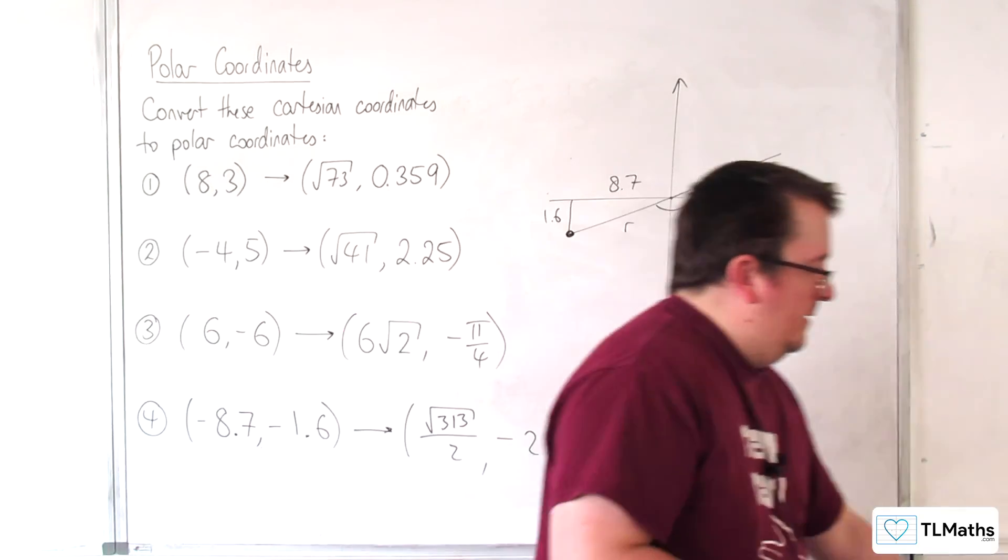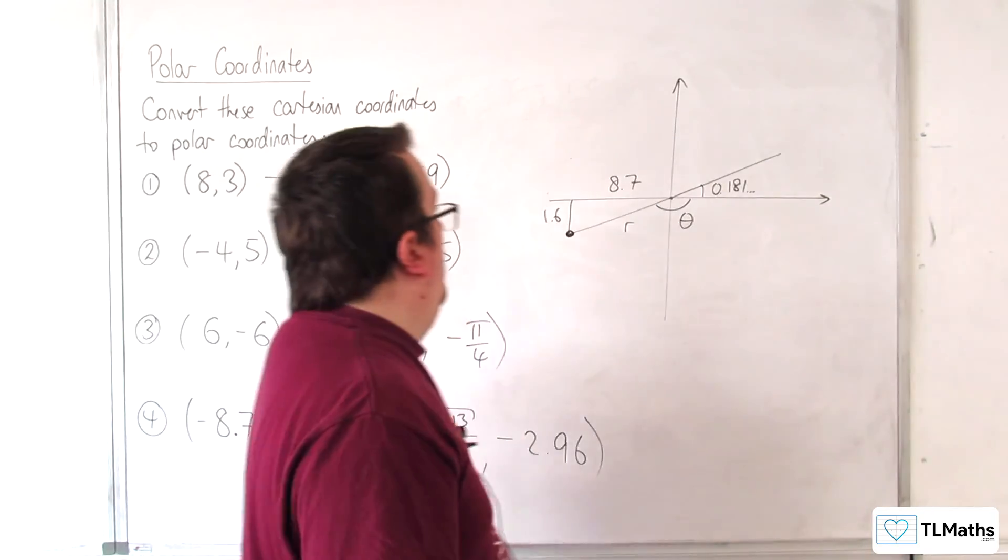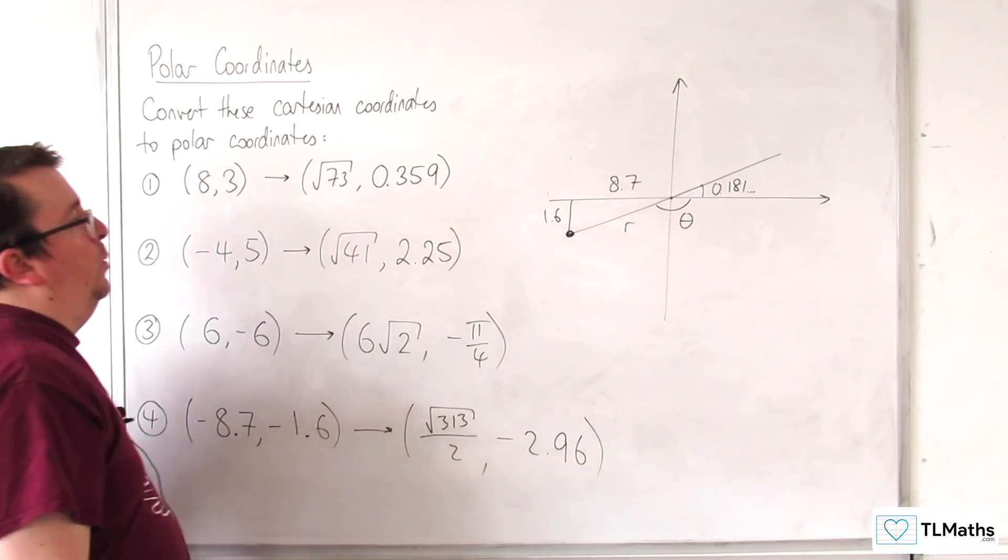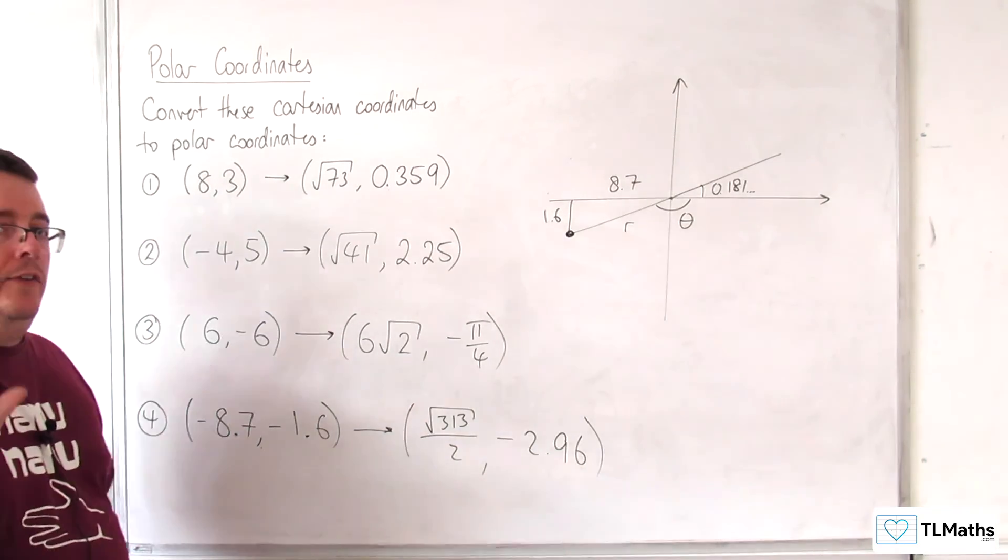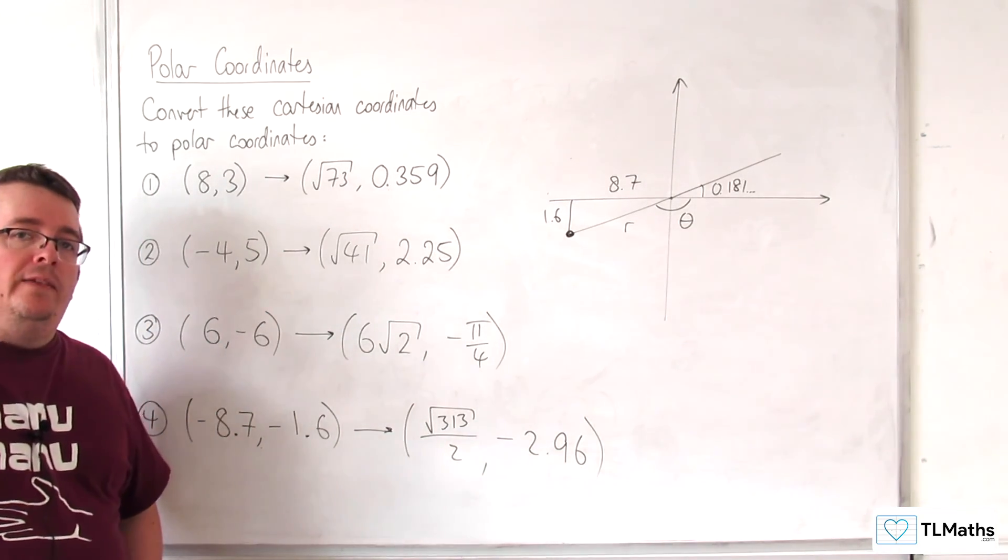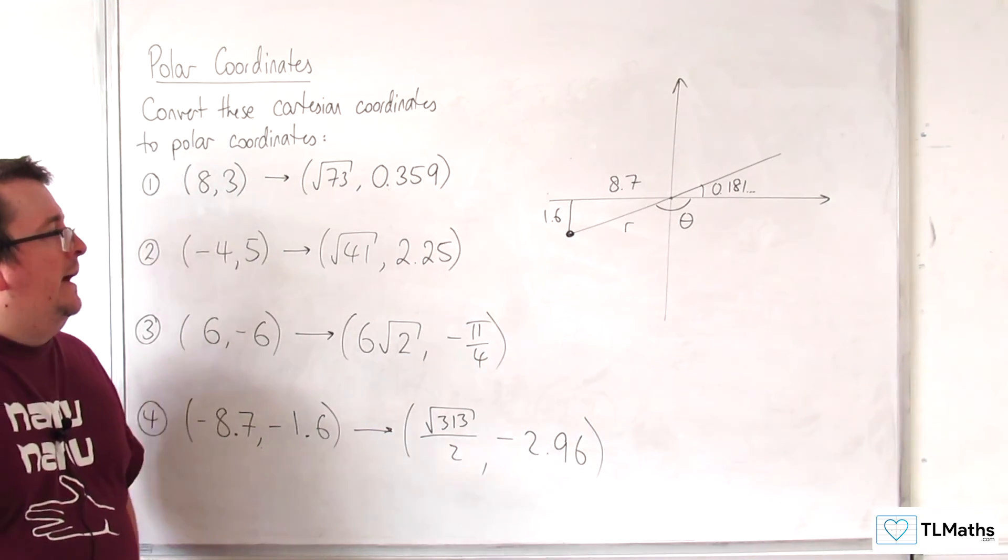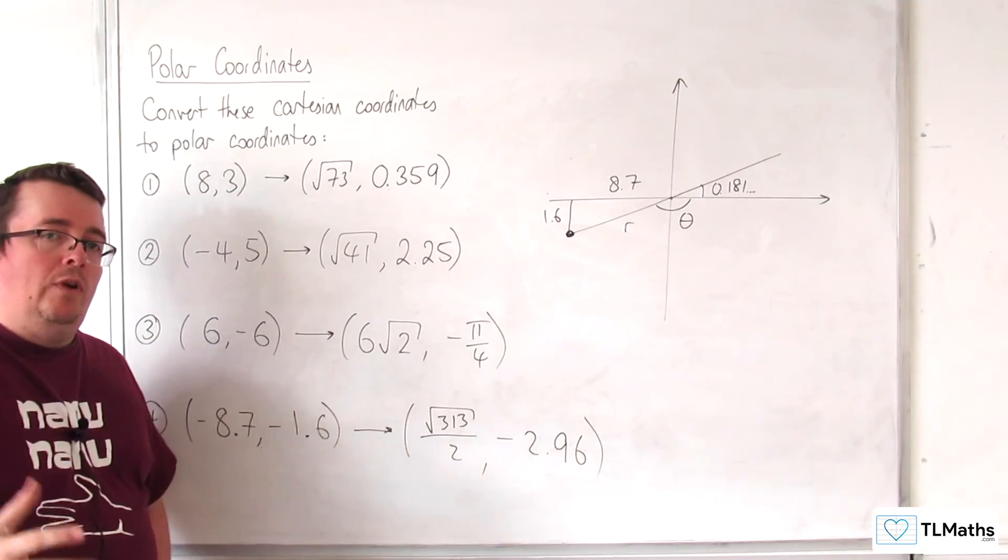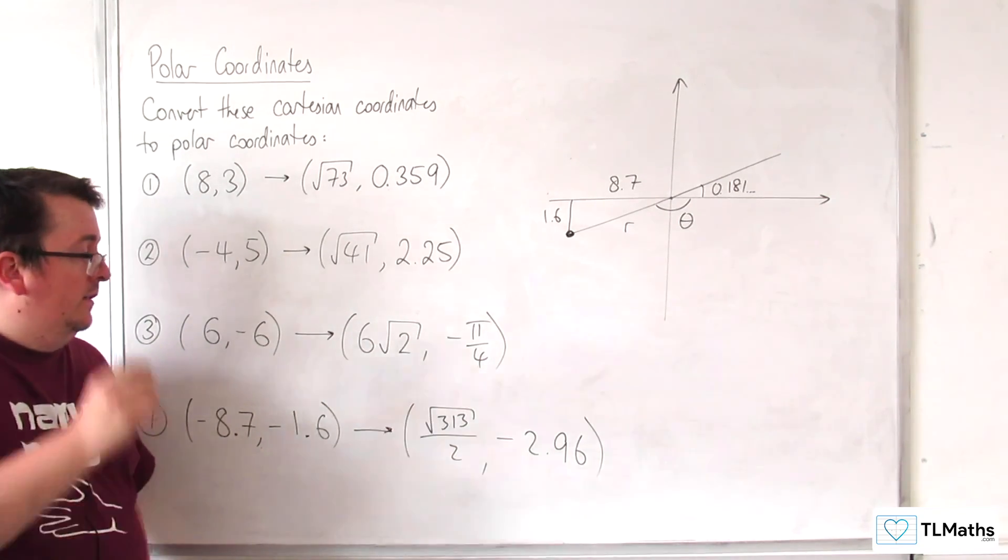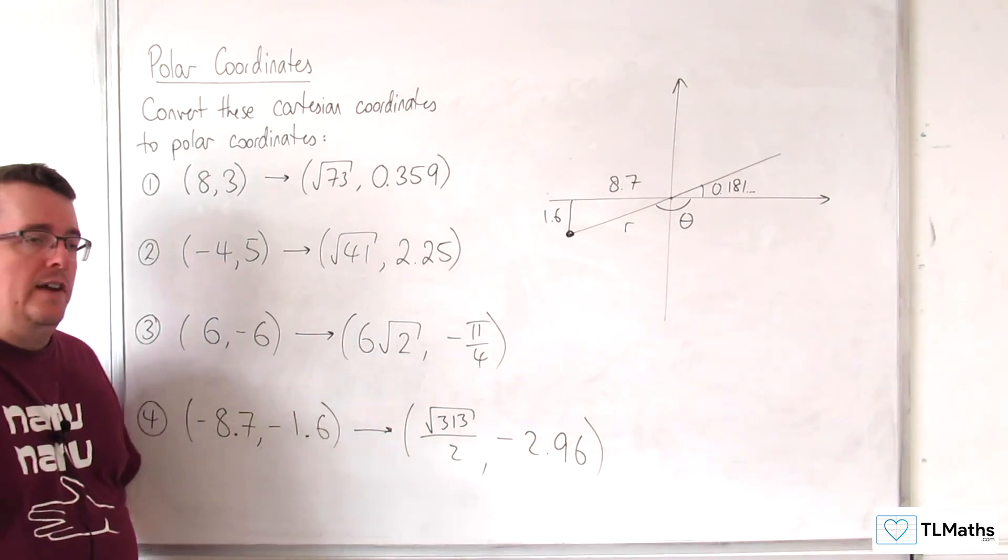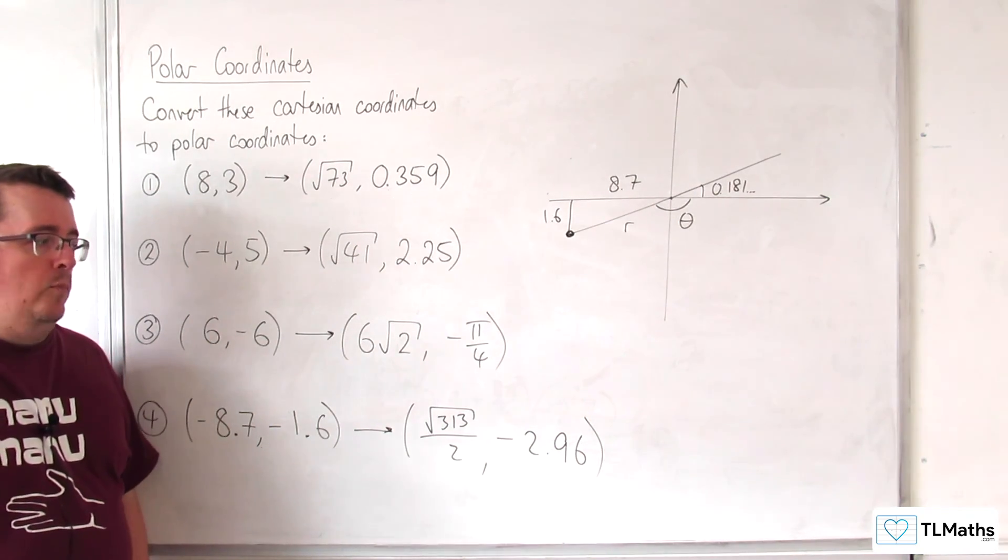Okay, so again, if the point is in the top left quadrant or the bottom left quadrant, your inverse tan of y over x method, you've got to keep an eye on it. It's not going to work. You're going to need to either add pi or subtract pi depending on where you are. But the best way forward is probably just draw a diagram so you can see where the point should be.